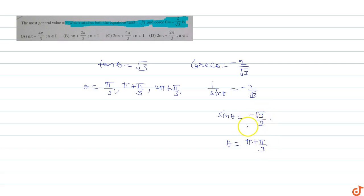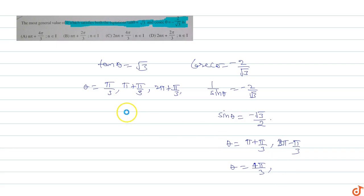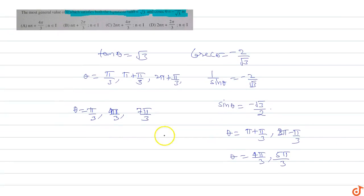The reference angle is pi by 3 since sin of pi by 3 equals root 3 upon 2. So minus root 3 upon 2 corresponds to theta equals pi plus pi by 3, which is 4pi by 3, or 2pi minus pi by 3, which is 5pi by 3. So the theta values are 4pi by 3 and 5pi by 3. The common feasible value of theta satisfying both equations is 4pi by 3, which is the smallest common value.